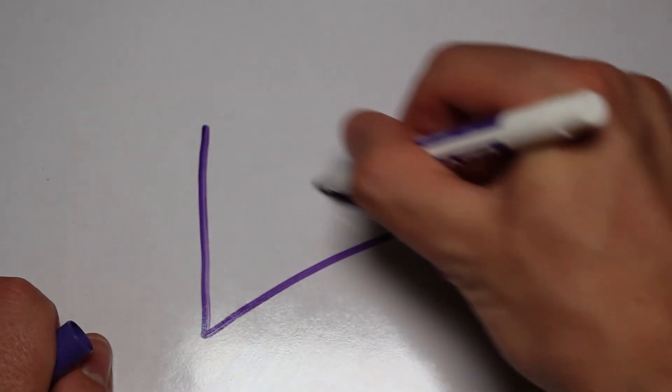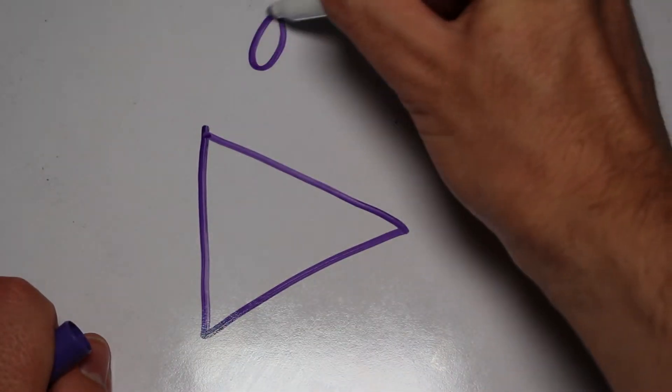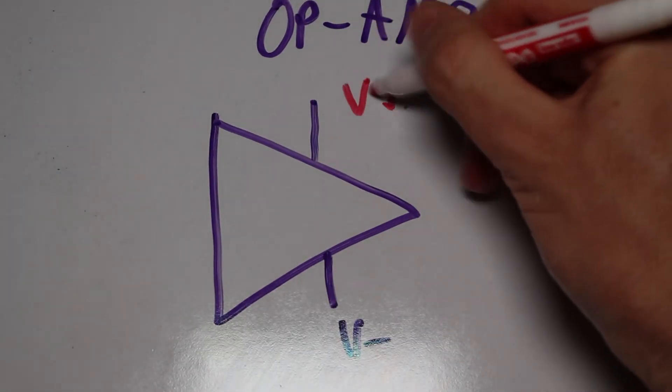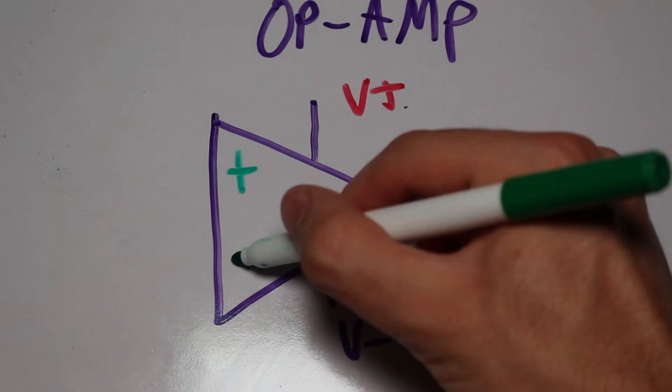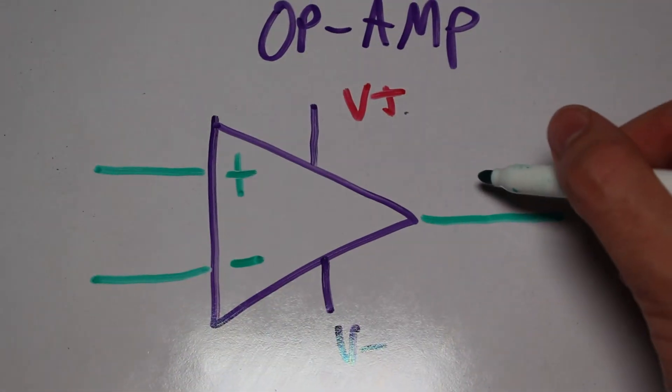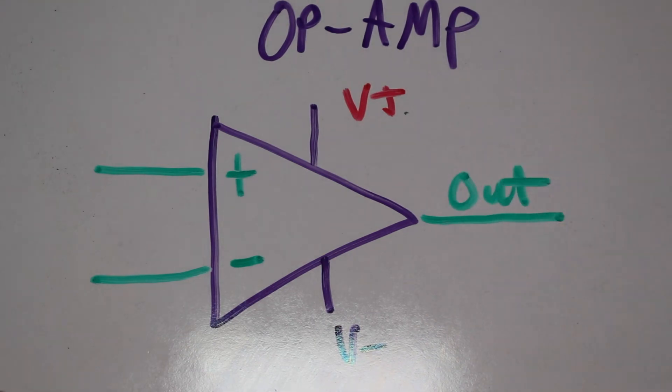Before we actually make that op-amp, let me describe basic op-amp knowledge and behavior. The typical op-amp has five pins. Two are the positive and negative supplies, and the others are the output and the inverting and non-inverting inputs. There are a few rules about the op-amp that you should know so that you can start making your own circuits.